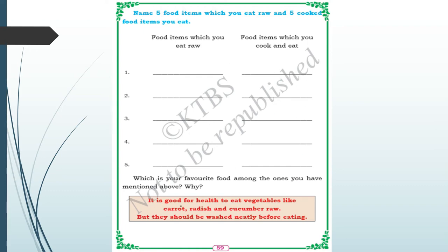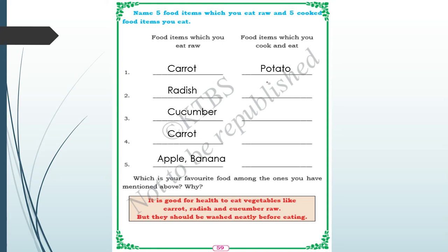It is good for health to eat vegetables like carrot, radish, and cucumber raw, but before eating you should wash them. You can mention carrot, radish, cucumber, apple, banana as raw items, and for cooked items: potato, cauliflower, cabbage, meat, rice, and dal.